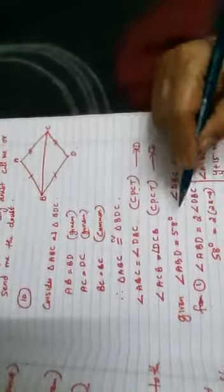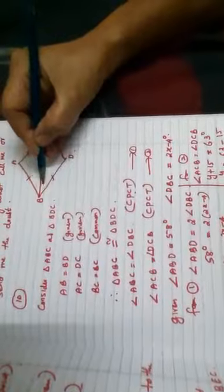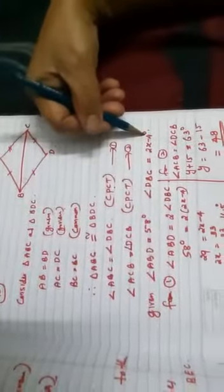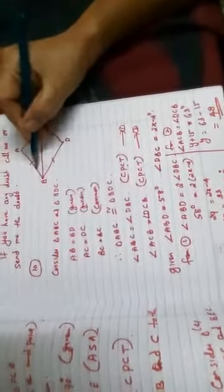Here, given ABD, that is the full angle. This full angle is equal to 180 degrees. And DBC, this small angle, is equal to 2X minus 4. We have ABD is equal to 2DBC because these two angles are equal.